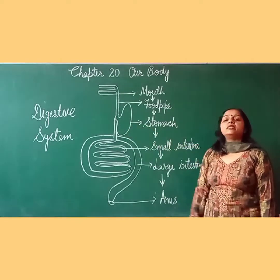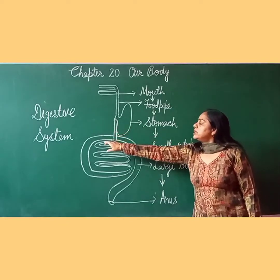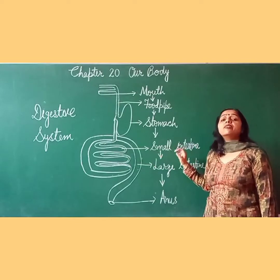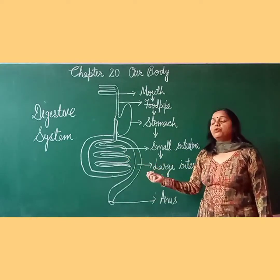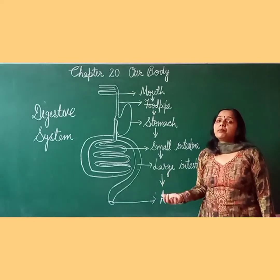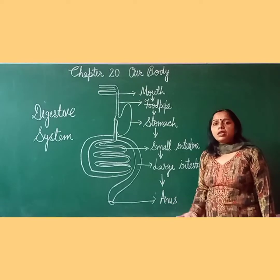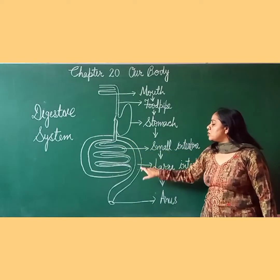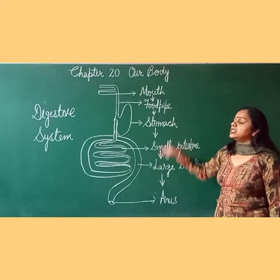The food is broken down into a liquid form. It then enters the small intestine where it is digested completely. The useful nutrients are absorbed into the blood and the undigested food goes into the large intestine and leaves the body. This is our digestive system.